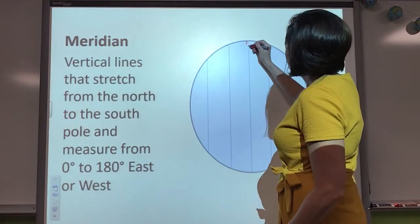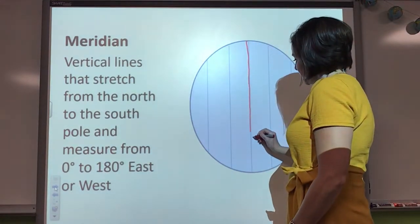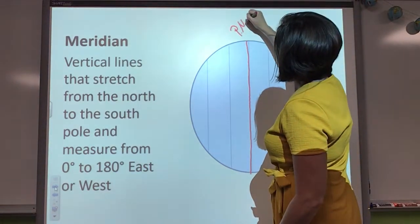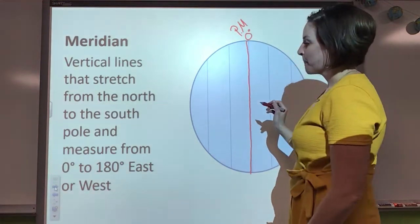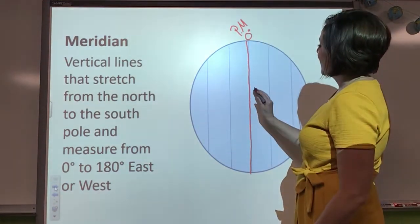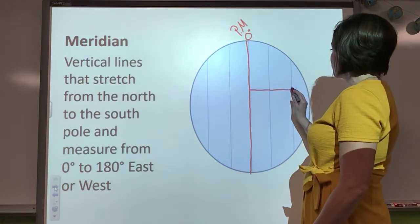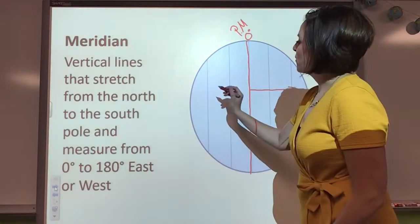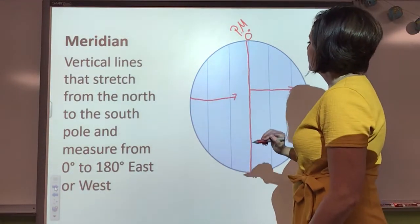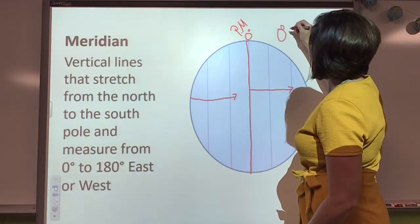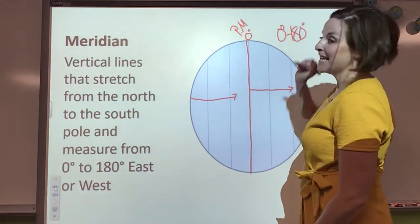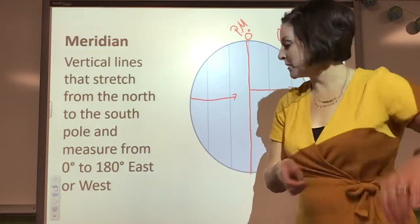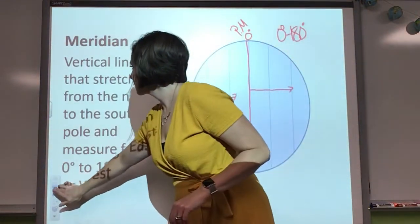So our zero degrees is our prime meridian. Prime meridian, zero degrees. And then these lines go all the way around the globe until they get to the other side, and they wrap back around. So they go from zero degrees to 180 degrees. So there's more of them wrapping around.